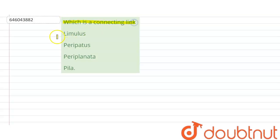Which is a connecting link? Our options are Limulus, Peripatus, Periplanata, or Pila. Let's discuss the options one by one.